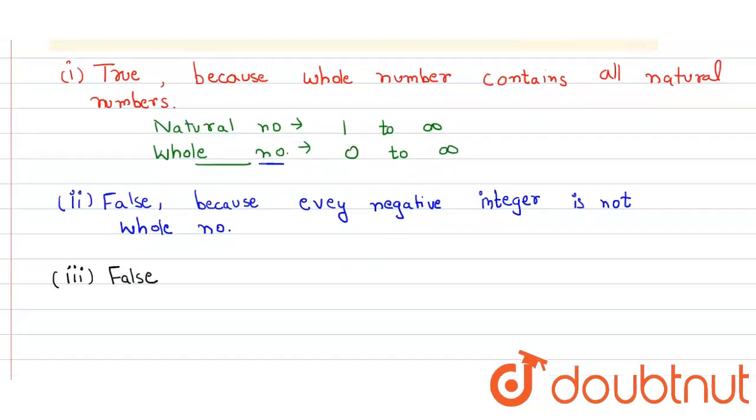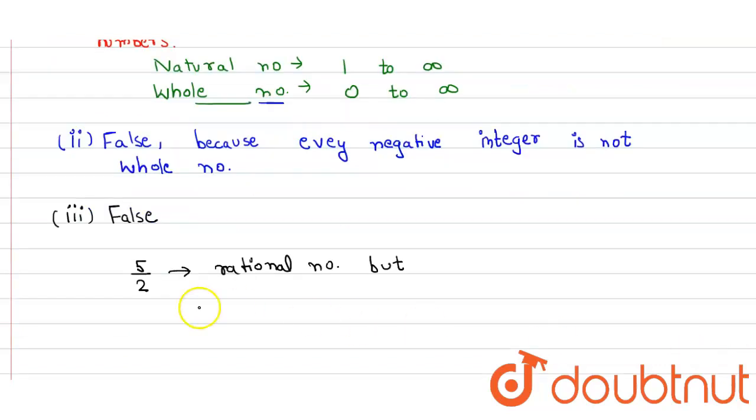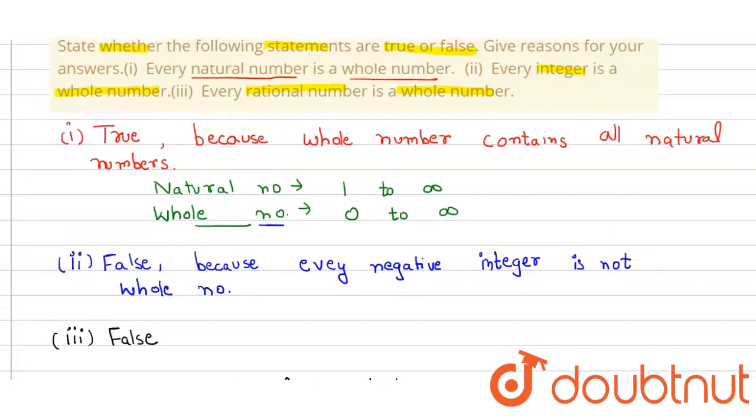Because there are some rational numbers like 5 by 2. It's a rational number but not a whole number, so the given statement is false.